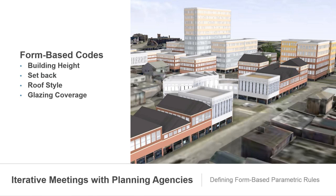We identified some key zoning code attributes to be represented by the models, such as height, setback, roof style, glazing coverage (which is the percent of windows), and the facade material. As we worked with the city and reviewed and refined these models, we could quickly react to city feedback with small changes in the CGA code and make updates across the entire basemap.